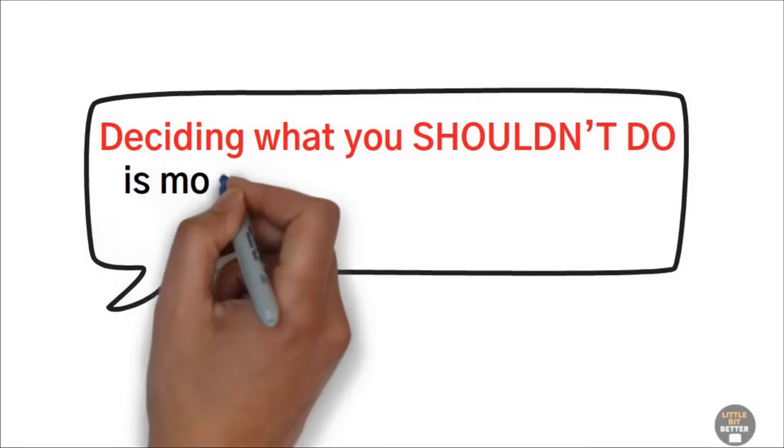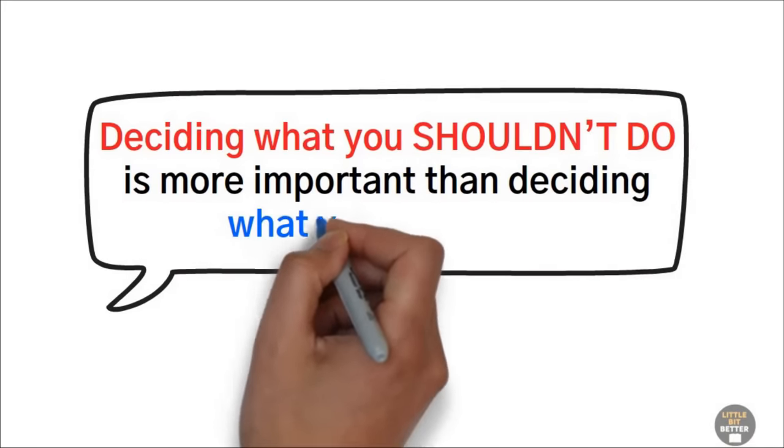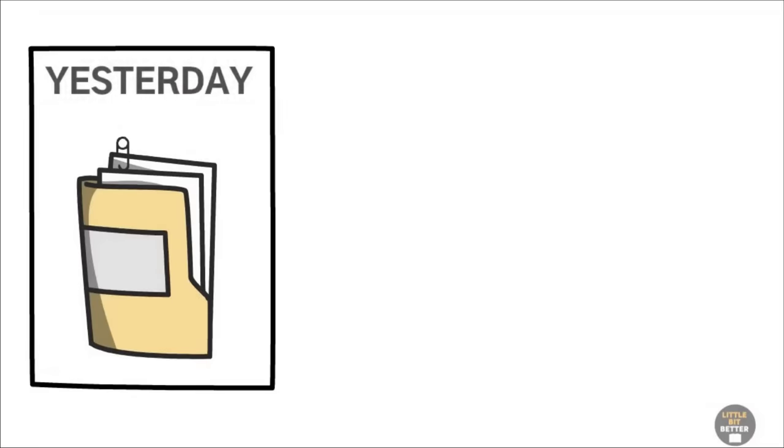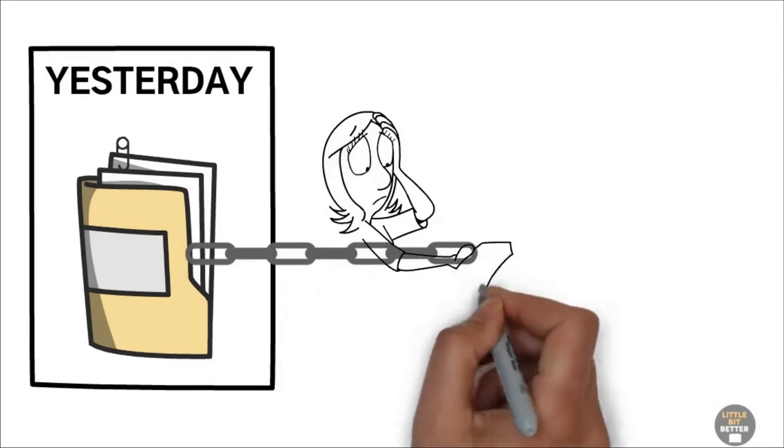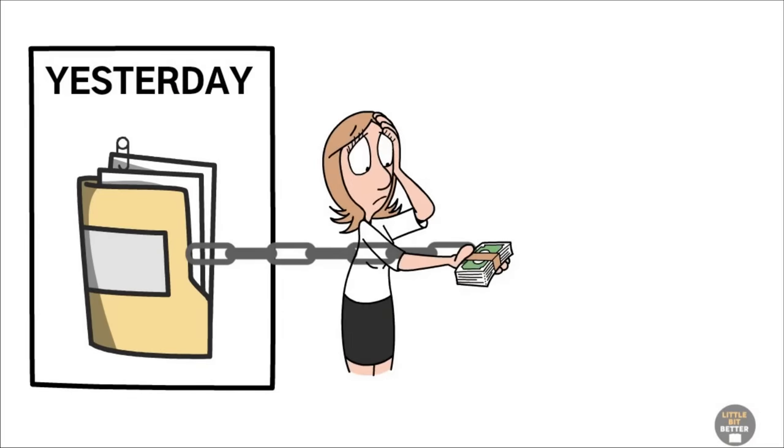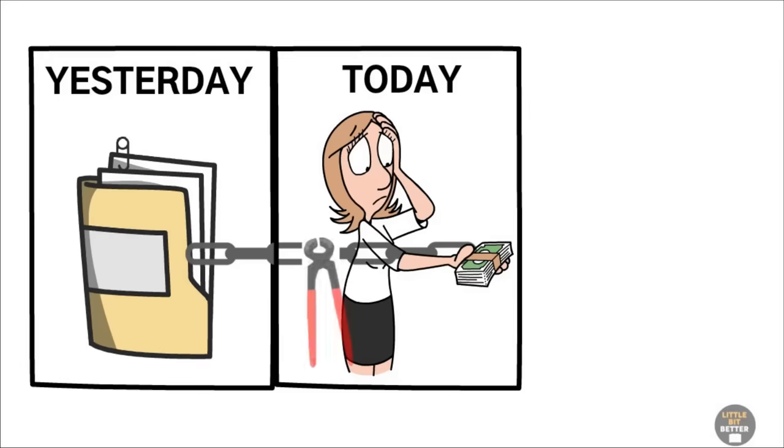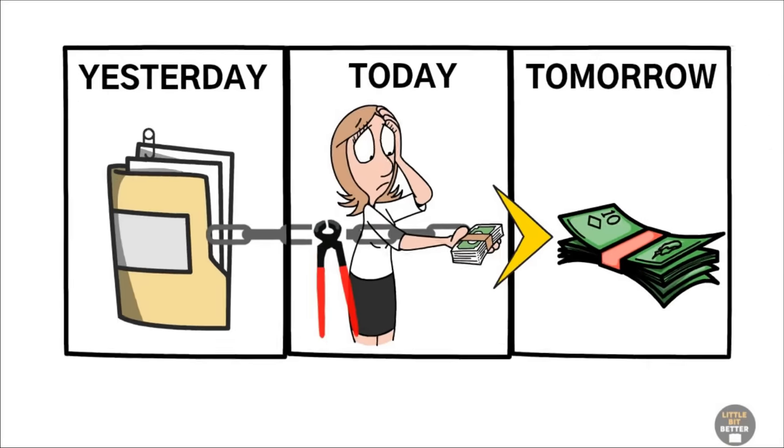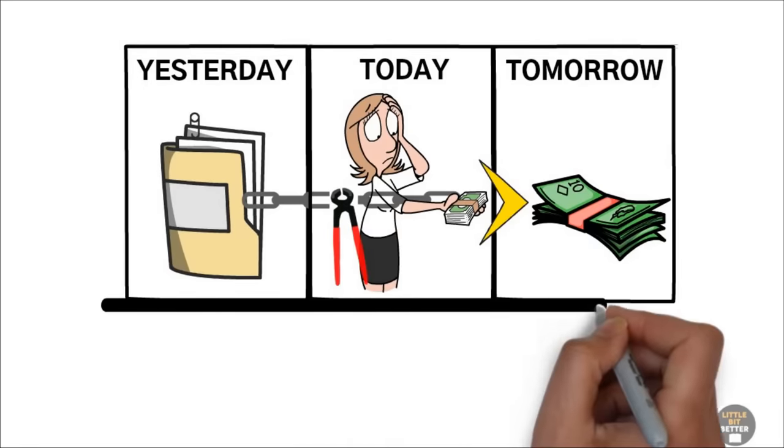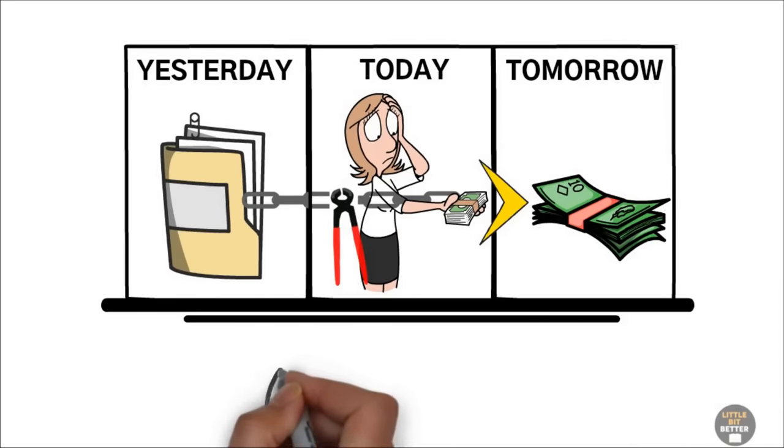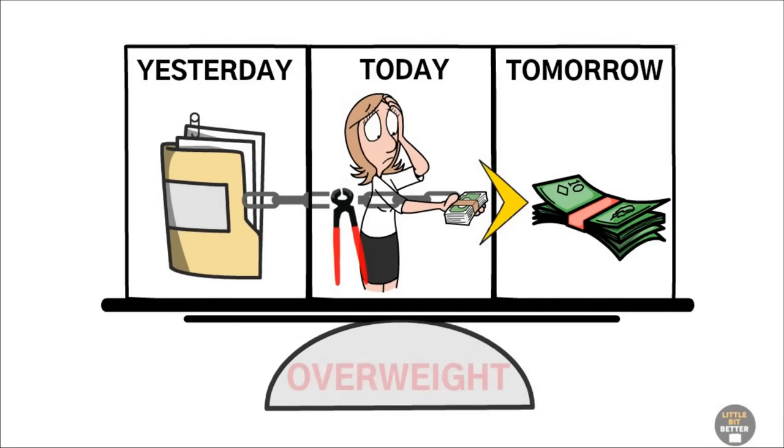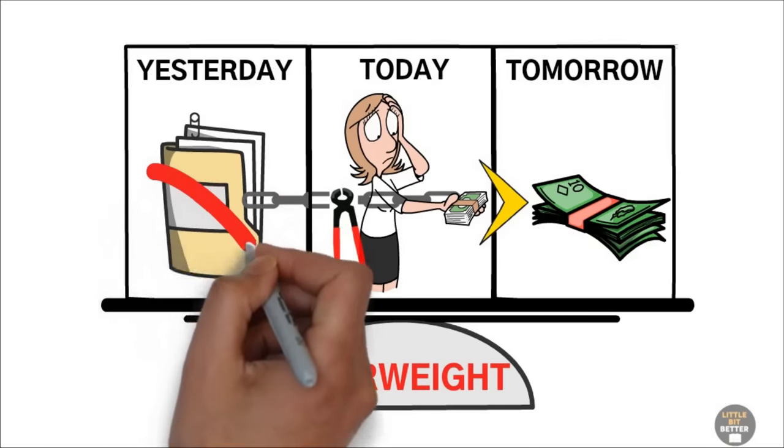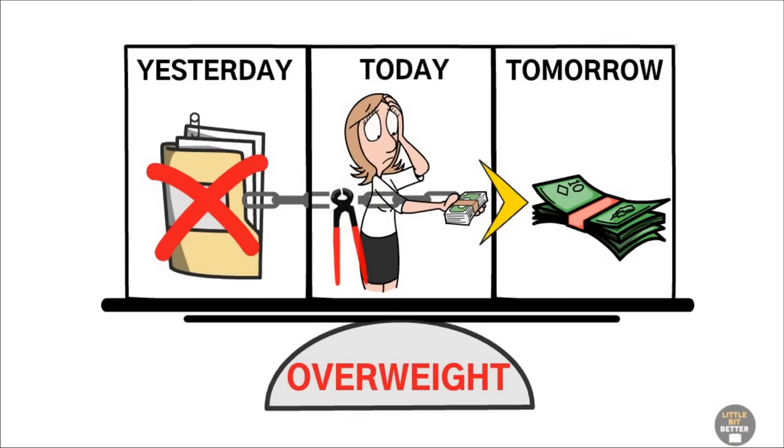Drucker says, deciding what you shouldn't do is more important than deciding what you should do. Effective people understand that yesterday's tasks and decisions, no matter how wise they may have been, inevitably become today's problems and stupidities. You have to cut them off so that you can dedicate today's resources to tomorrow. This is necessary in order to keep organizational weight control. Without it, the company or the person soon loses shape and becomes overweight. You need to stay lean and muscular. Regularly deleting tasks is the only way.